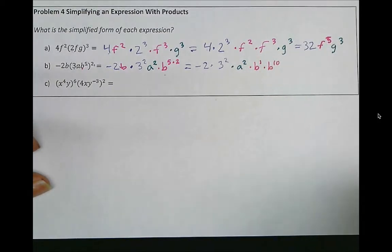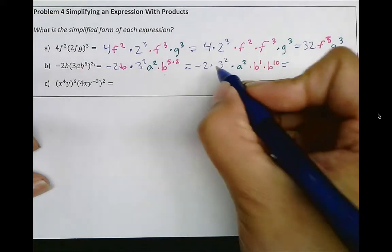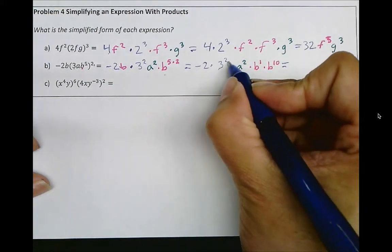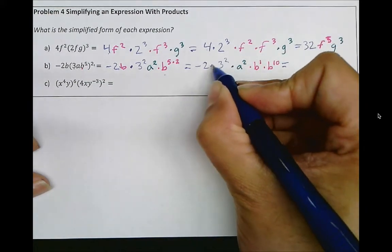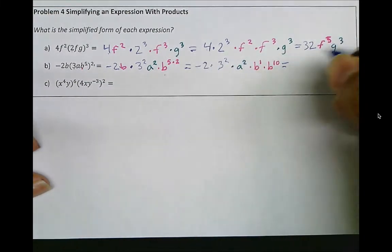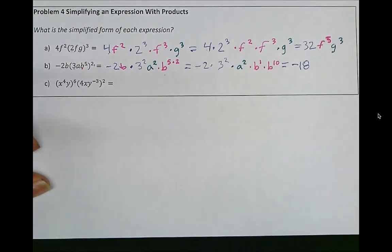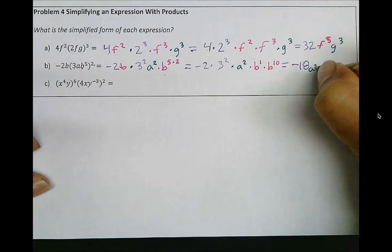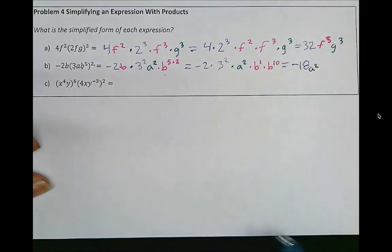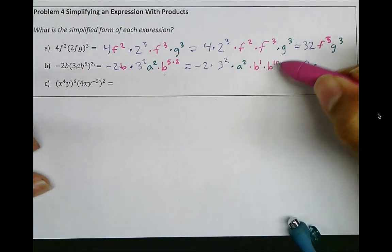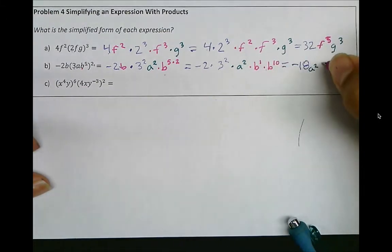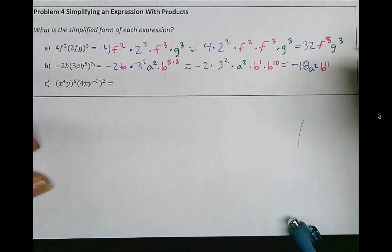Let's simplify. 3 to the power of 2 is 9, and 9 times negative 2 is negative 18. a squared just stays as a squared, and b to the first times b to the 10th becomes b to the 11th.